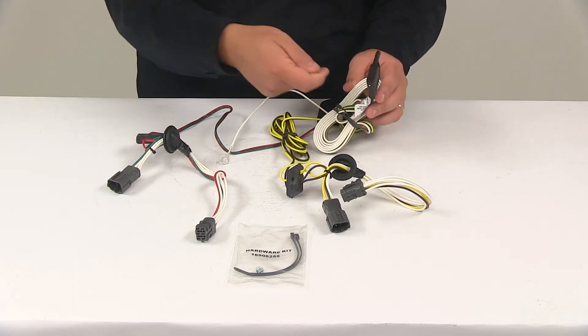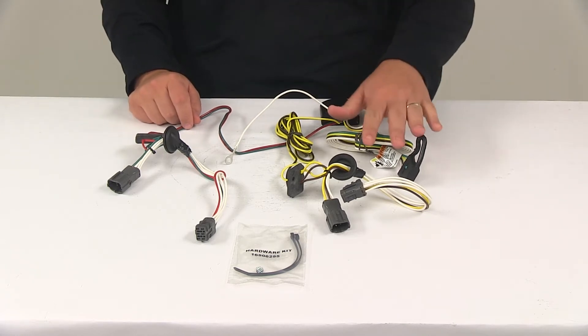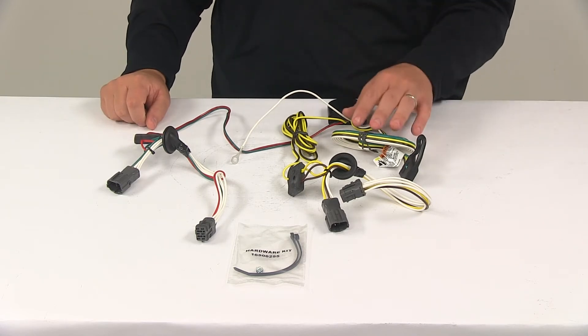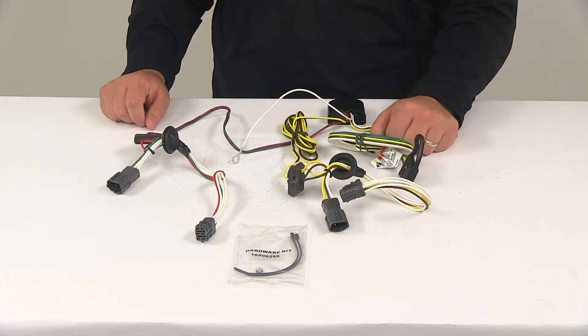When you are ready to use it, unbundle it, feed it out the back of the vehicle. Make sure to avoid the latching mechanism. You can close the door over it. It's not going to harm the harness in any way. You can make your connection as necessary and get on your way.